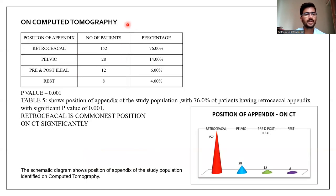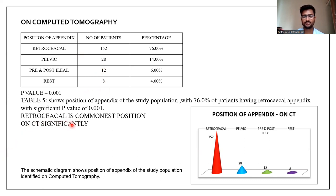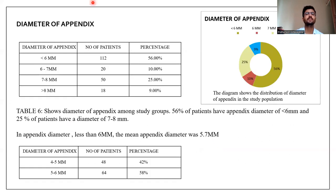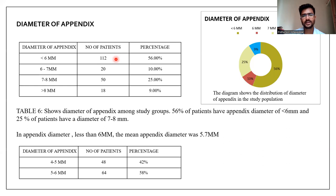On CT, the most common position of the appendix was retrocecal, followed by pelvic, then pre-ileal, posterior, and the rest. Retrocecal is the commonest position. Regarding the diameter of the appendix, an appendix diameter of less than 6 mm was observed in 112 patients, that is 56% of patients, while 25% of patients had a diameter of 7 to 8 mm.